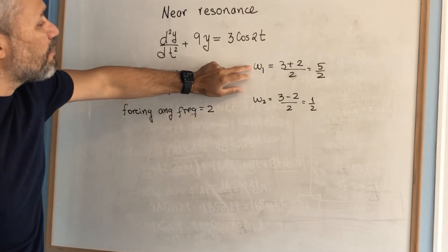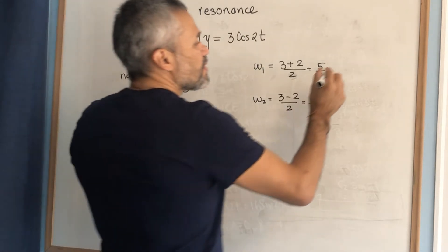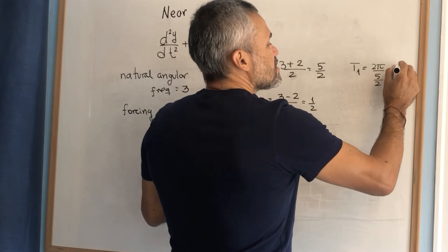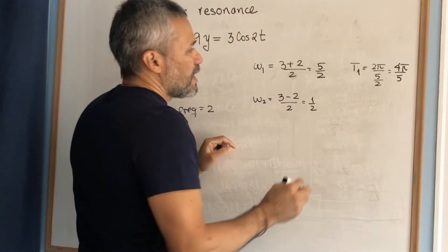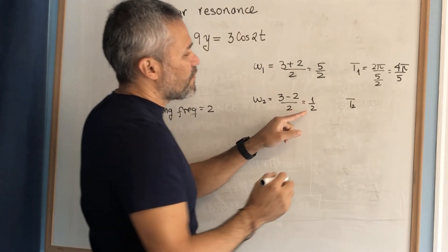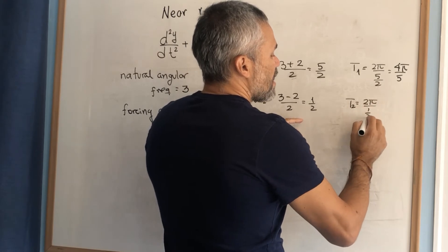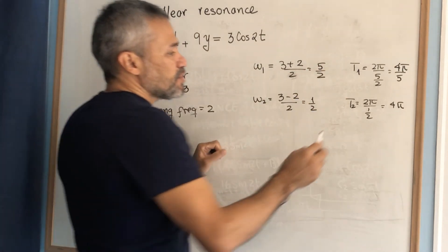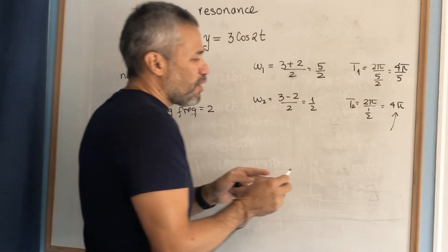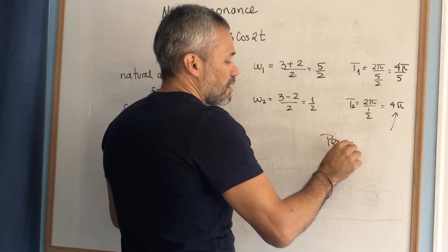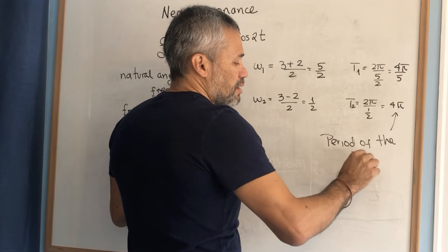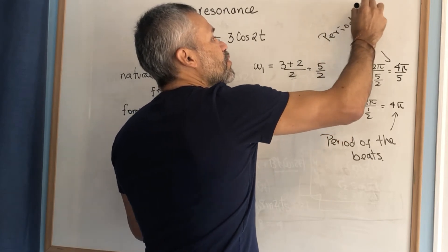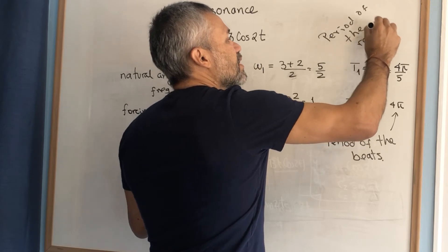Next, we compute the periods associated with these two frequencies. Period 1 is 2π over (5/2), which equals 4π/5. The period associated with angular frequency 1/2 is 2π over (1/2), which is 4π. One of these periods is bigger than the other: the larger period, 4π, we call the period of the beats, and the smaller period, 4π/5, we call the period of the rapid oscillation.